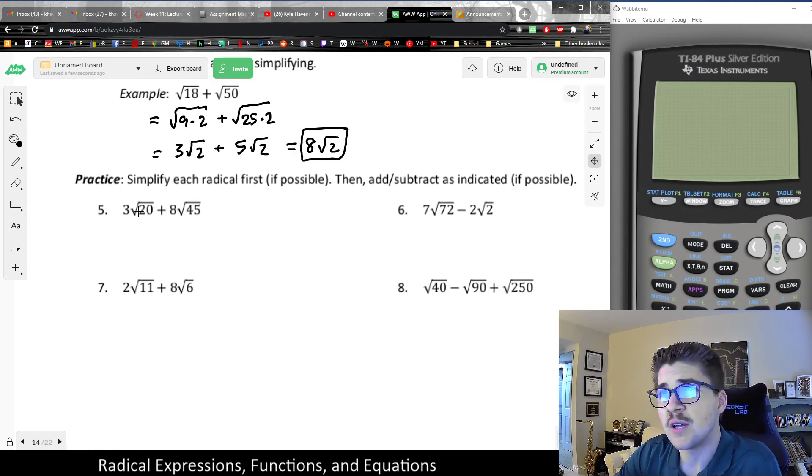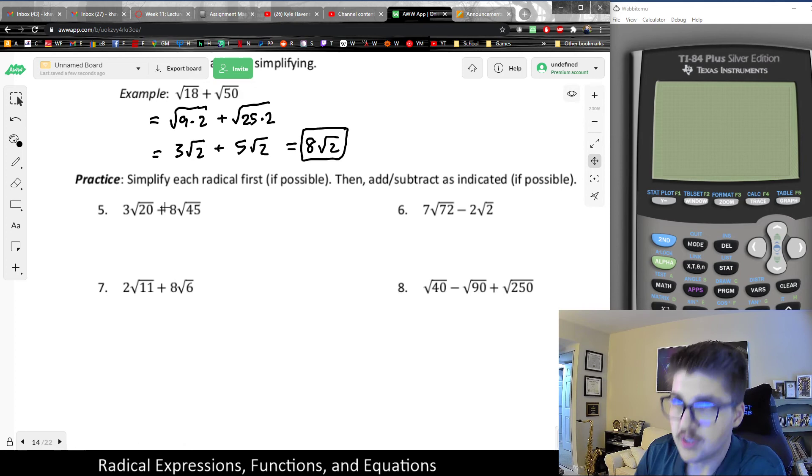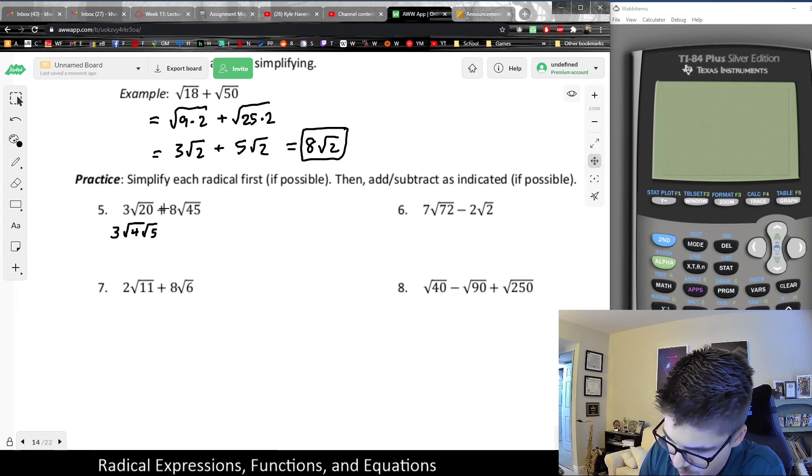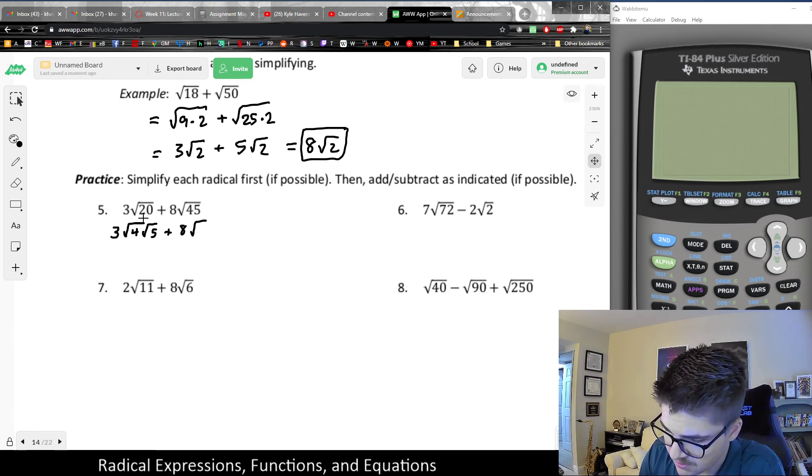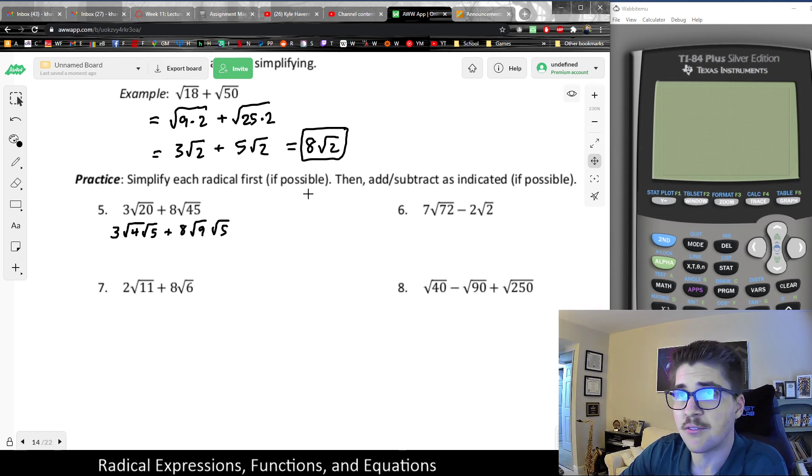But with this one, since 20 is 4 times 5, and just to mention, if there's a number out front, we could simplify this as 3 times root 4 times root 5. And 45 is, another trick is that once you've simplified the first one, if it will work, the second one should have the same non-perfect square. So with 45, that's 5 times 9. Notice that they both would share that root 5. But root 4 and root 9 will simplify. So this would be 3 times 2, which is 6 root 5.